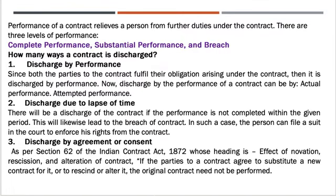Discharge by agreement or consent: as per Section 62 of the Indian Contract Act 1872, whose heading is effect of novation, rescission and alteration of contract — if the parties to a contract agree to substitute a new contract for it, or rescind or alter it, the original contract need not be performed. This is by the consent or willingness of all the parties to the contract.